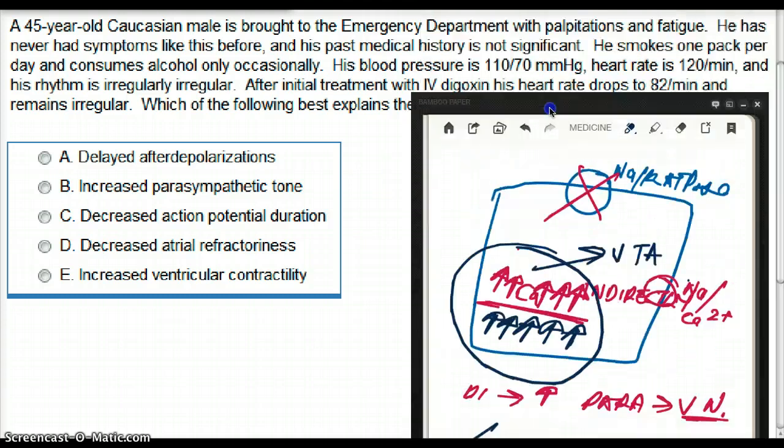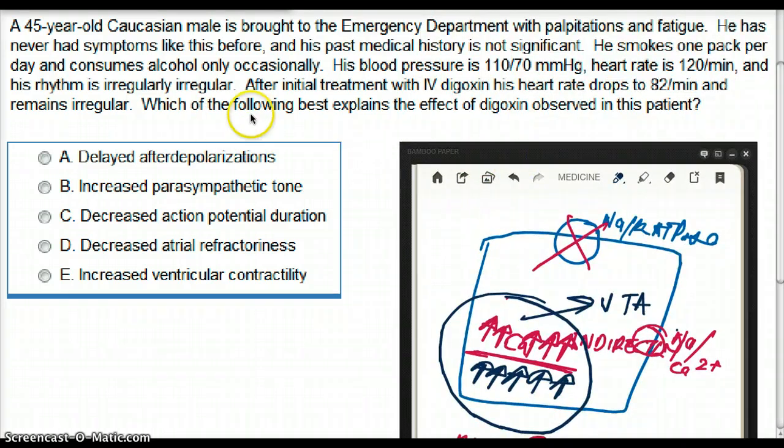That's not what is being asked here. Which of the following best explains the effect of digoxin observed in this patient? And what is happening in this patient? This patient has decreased heart rate. The decreased heart rate is not due to increased calcium or after depolarization. Right?